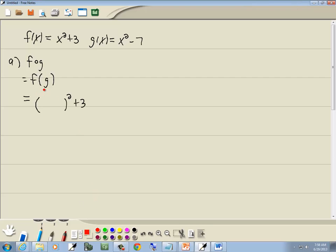This is evaluating a function, so whatever's inside parentheses right here, which is g, is what I'm going to put in right here. But g was x squared minus 7, so I'll put in x squared minus 7.